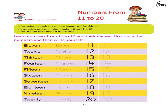Numbers from eleven to twenty. Learning outcomes: after going through this unit, the learner will be able to recognize, read, and write numbers from eleven to twenty. He/she will learn number names and also learn numbers from eleven to twenty and their names. First trace the numbers and then write yourself: eleven, twelve, thirteen, fourteen, fifteen.